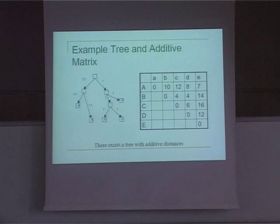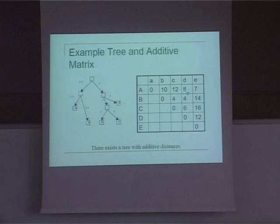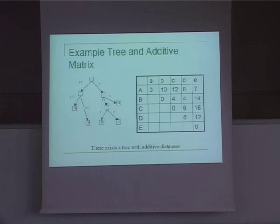Here is an example tree with an additive distance matrix — one that satisfies the triangular inequality, symmetry, and all metric constraints. If we have such an additive distance, we can always draw a tree that corresponds exactly to the distances. For example, the path distance between A and E is 7, and between D and E is 12. Computing every path distance between every pair of leaf nodes in this tree gives the values in the distance matrix.